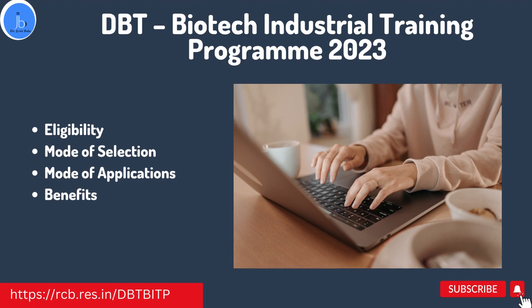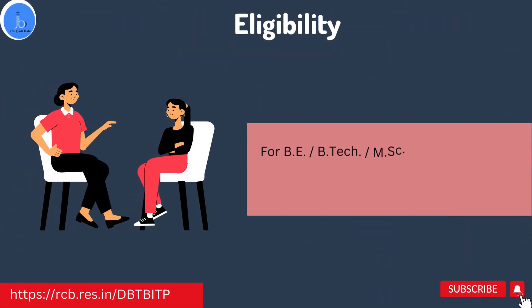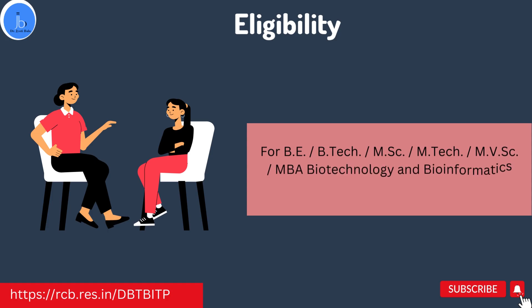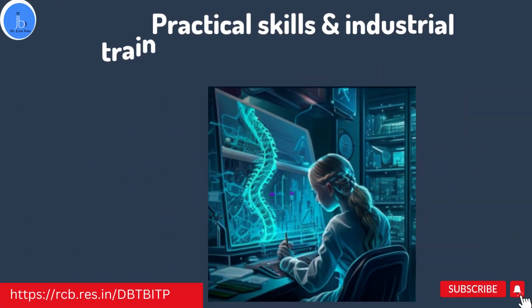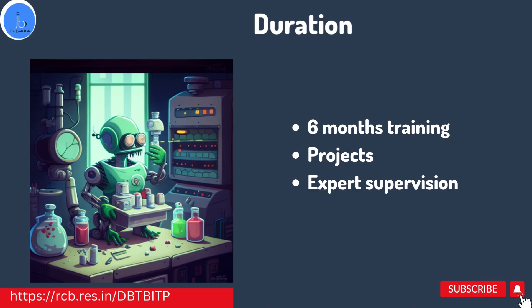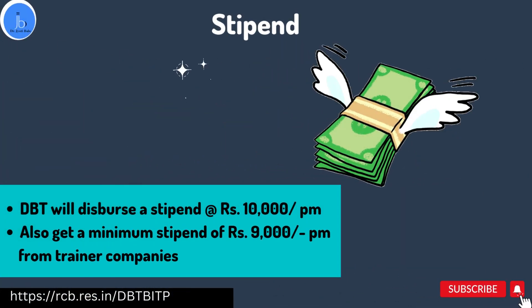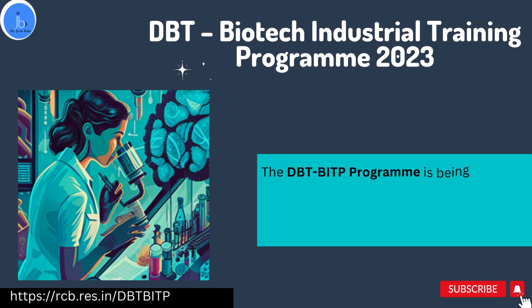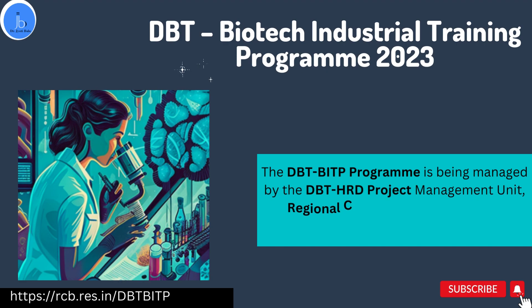The BITP scheme is a practical industrial training especially for students from Bachelor's in Engineering/Technology, Masters in Science, Master in Technology, Master in Veterinary Science, or MBA in Biotechnology, or Bioinformatics graduates. This program provides industrial training based on the current job scenario in biotechnology. The duration is around six months, during which you get practical experience working on projects under the supervision of industrial experts, along with a stipend. This DBT Biotech Industrial Training Program is implemented by DBT HRD Project Management Unit at the Regional Center of Biotechnology (RCB), Faridabad, on behalf of the Department of Biotechnology, Government of India.